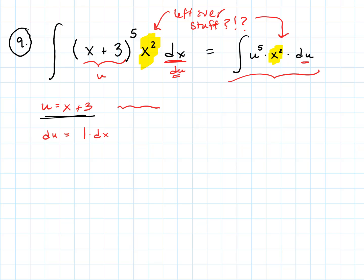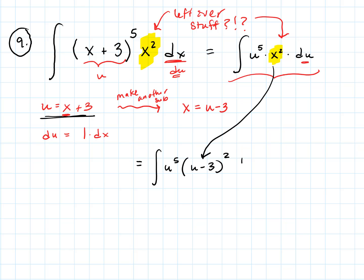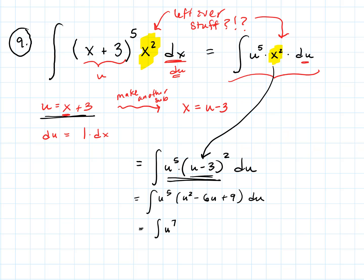What we do is use how we've already defined u to make another substitution. Since u = x + 3, we can write x = u − 3. So the x² term becomes (u − 3)². The integral is now u⁵(u − 3)² du — entirely in terms of u. Expanding: u⁵(u² − 6u + 9) = u⁷ − 6u⁶ + 9u⁵ du.